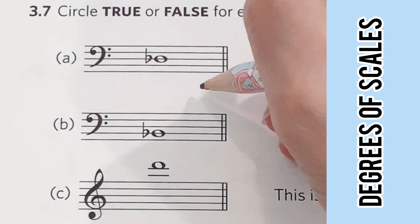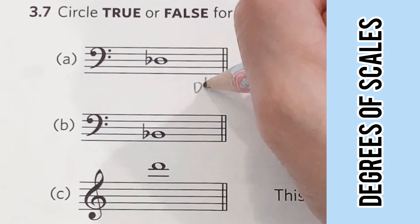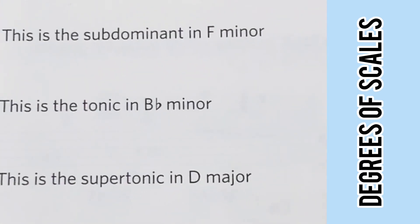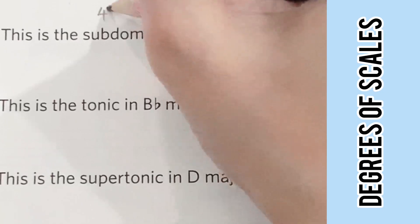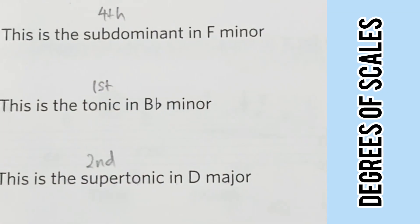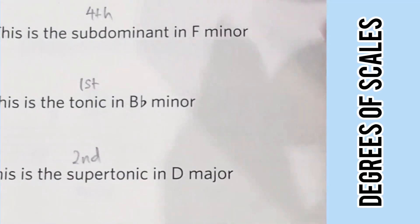For the next section, let's write the letter name for each of the question. There's a name for every degree of the scale. Subdominant is the fourth, tonic is the first, and supertonic is the second.